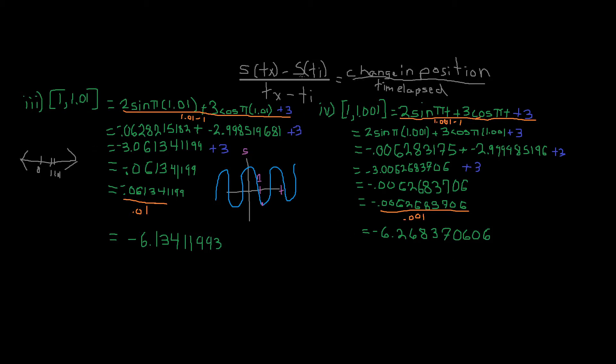the numbers converge to a certain number. So before we get to that, I wanted to mention that this, which is the slope of the secant line, which is the rise over the run, and this could also be mentioned to be the change in position divided by time elapsed.